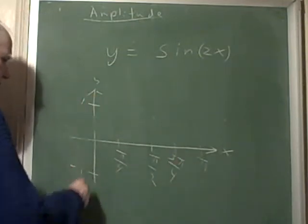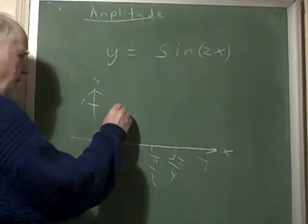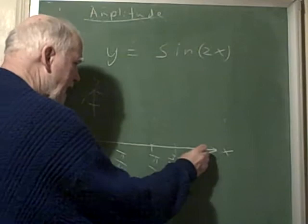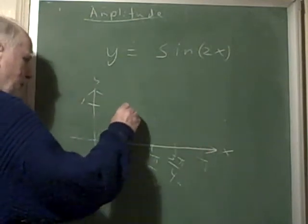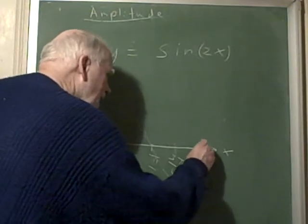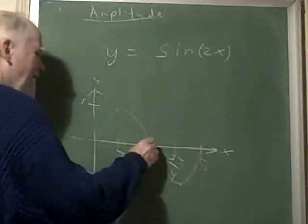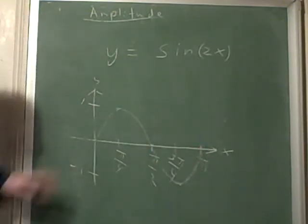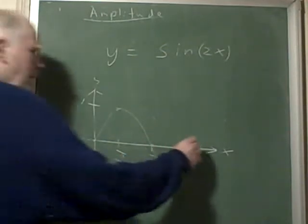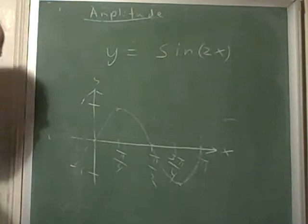It still goes as high as 1 and down as low as negative 1, but notice that it finishes the period in a lot shorter time, in fact exactly half the time. Zero to pi, and it keeps going along in that same manner.